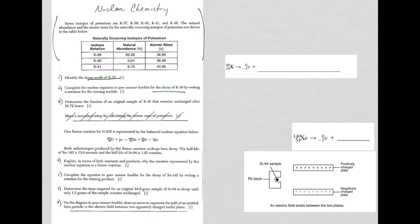When you balance nuclear equations, you just have to make sure that your mass numbers, which are the top numbers, are equal on both sides. And the atomic numbers, which are the bottom numbers, are equal on both sides.